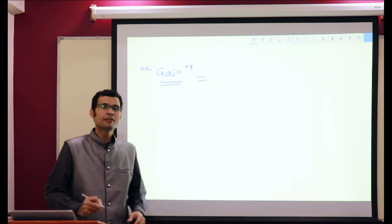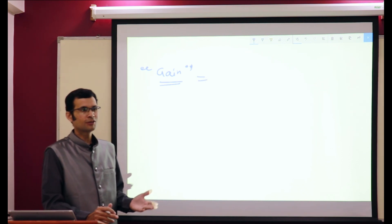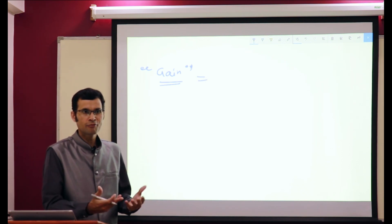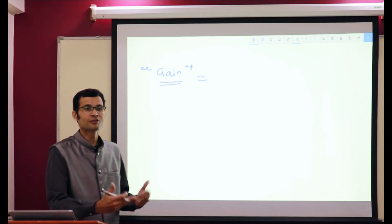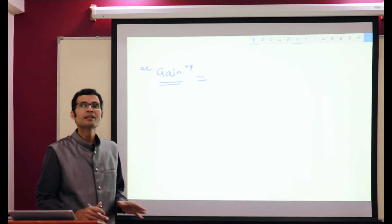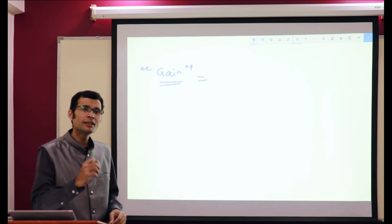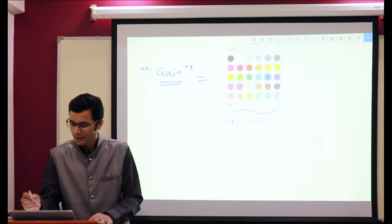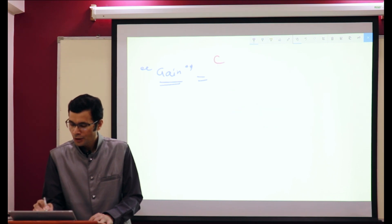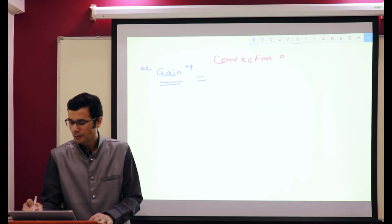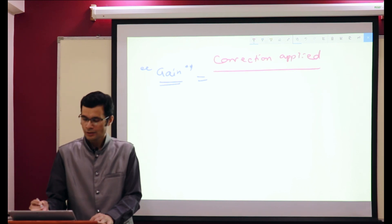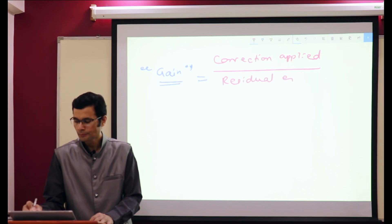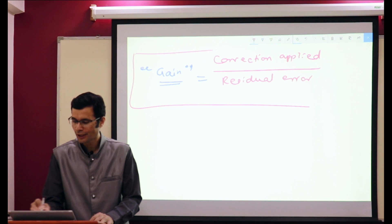The efficiency of a negative feedback mechanism or homeostatic regulatory mechanism is quantified in terms of its gain. Gain is defined as the correction applied by the homeostatic regulatory mechanism divided by the residual error. That is the definition of gain.